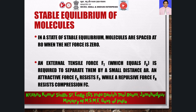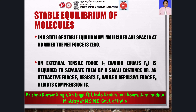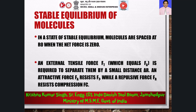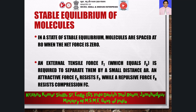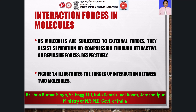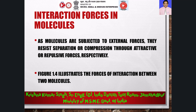Stable equilibrium and external forces. In a state of stable equilibrium, the molecules are separated by a distance r zero, where the net force is zero. If we apply an external tensile force Ft — for instance, by stretching the material — this would tend to pull the molecules apart by a small distance delta r. To resist this, an attractive force fa is generated between the molecules. Similarly, if a compressive force is applied, a repulsive force fr develops. As seen in figure 1.4, the molecules adjust their spacing as forces are applied, and this interaction plays a key role in how materials deform.